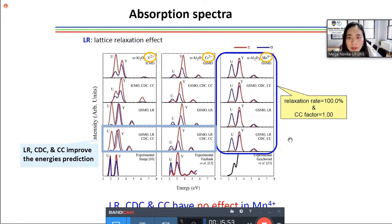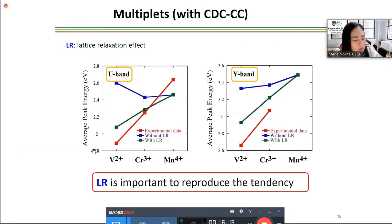Okay, here in the case of manganese 4+, lattice relaxation factor is 100% and CC is 1. That means no correction at all in the case of manganese 4+. But for the case of vanadium 2+ and chromium 3+, lattice relaxation CDC and CC improves the energy. So, here if we picture the multiplet energies of D3 ions in alpha-alumina for U-band and Y-band, then we will get increasing tendency of both U-band and Y-band in the order of vanadium 2+, chromium 3+ and manganese 4+.